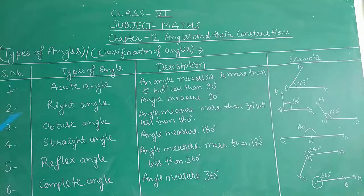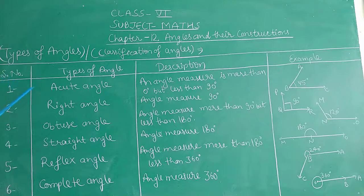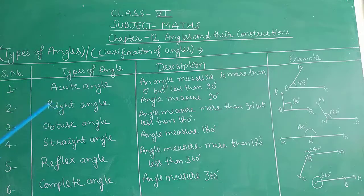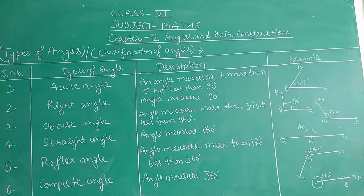We know that there are many types of angles: acute angle, right angle, obtuse angle, straight angle, reflex angle and complete angle. We describe these angles by this table — serial numbers 1 to 6 — and the first type of angle is acute angle.